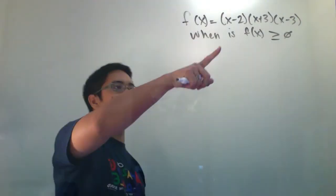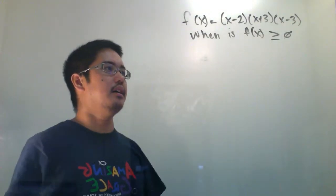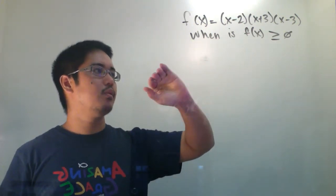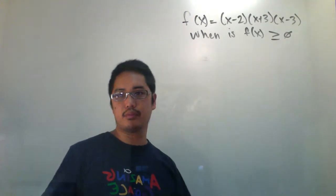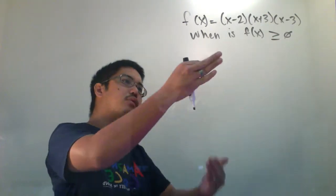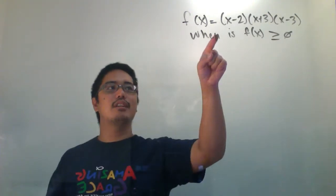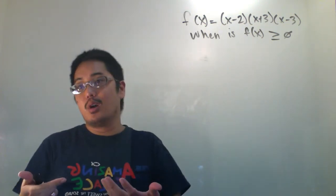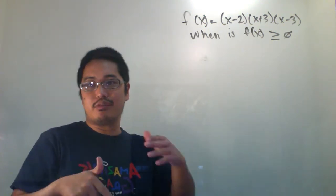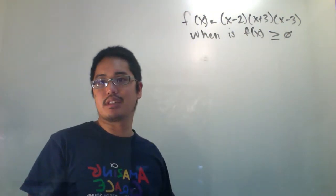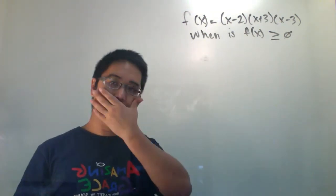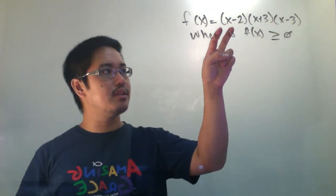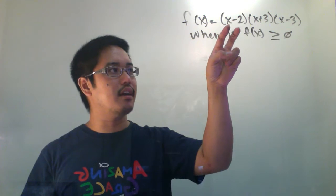Check it out — we've got f(x) equals (x minus 2)(x plus 3)(x minus 3). When is f(x) bigger than or equal to zero? What kind of function is this — is it a quadratic, a parabola, or a cubic? It looks cubic to me. Yes, because there are three factors — if you were to multiply all of this out, you'd get an x cubed term.